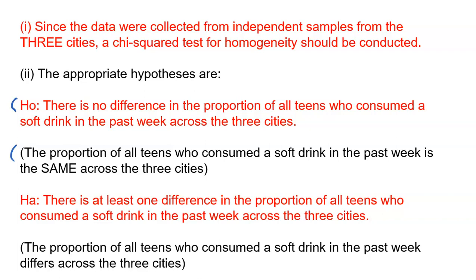The alternative hypothesis also has two wording options. One: there is at least one difference in the proportion of all teens who consumed a soft drink in the past week across the three cities — at least one city is different from the others. Another way of saying it: the proportion of all teens who consumed a soft drink in the past week differs across the three cities. The cool thing about this problem is it doesn't ask us to actually carry out the chi-squared test — those are a little lengthy. The AP test sometimes just focuses on understanding when chi-squared tests need to occur and what the hypotheses are.